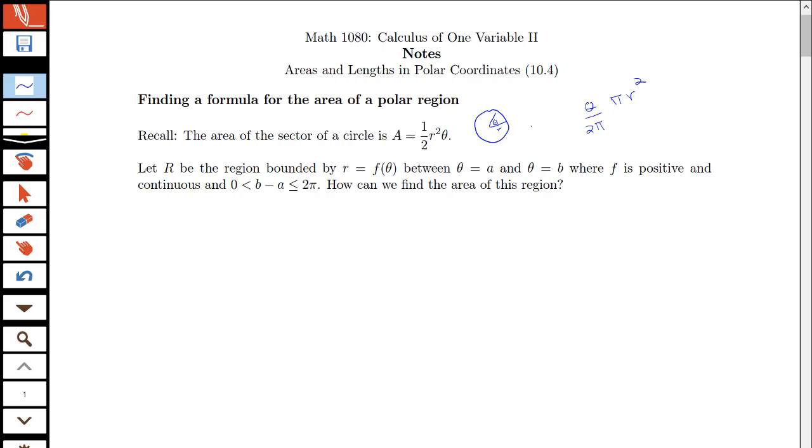So we'd have 2π would be going around the whole circle. I want the fraction theta out of 2π times πr squared, the area of the whole circle. So that's how we get the one-half r squared theta.